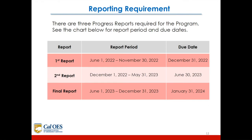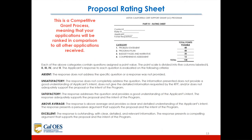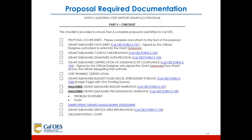There are three progress reports required for the program. See the chart in the RFP for report periods and due dates. This is a competitive grant process, meaning your applications will be ranked in comparison to all other applications received — the proposal rating sheet is also located in the RFP. The proposal required documentation checklist is also in the RFP to help you keep track of all documents required to be submitted.